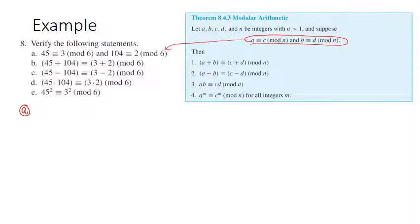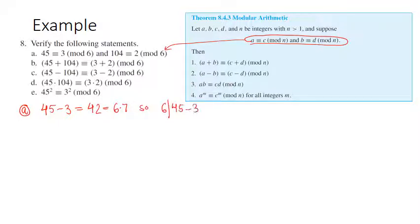Is 45 congruent to 3 mod 6? I have to check that 45 minus 3 is divisible by 6. 45 minus 3 is 42, and that is 6 times 7. So 6 divides 45 minus 3, which means 45 is congruent to 3 mod 6.